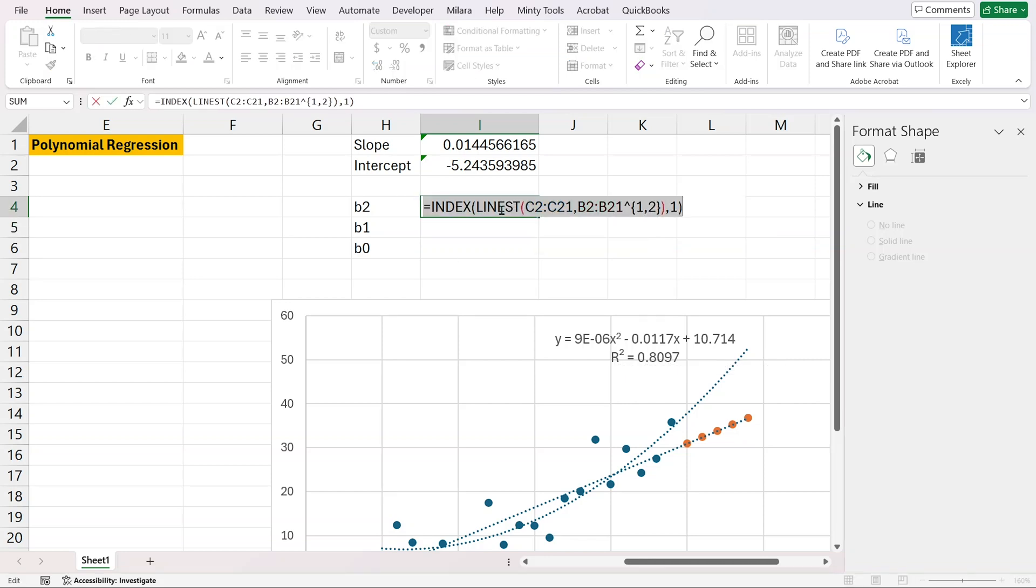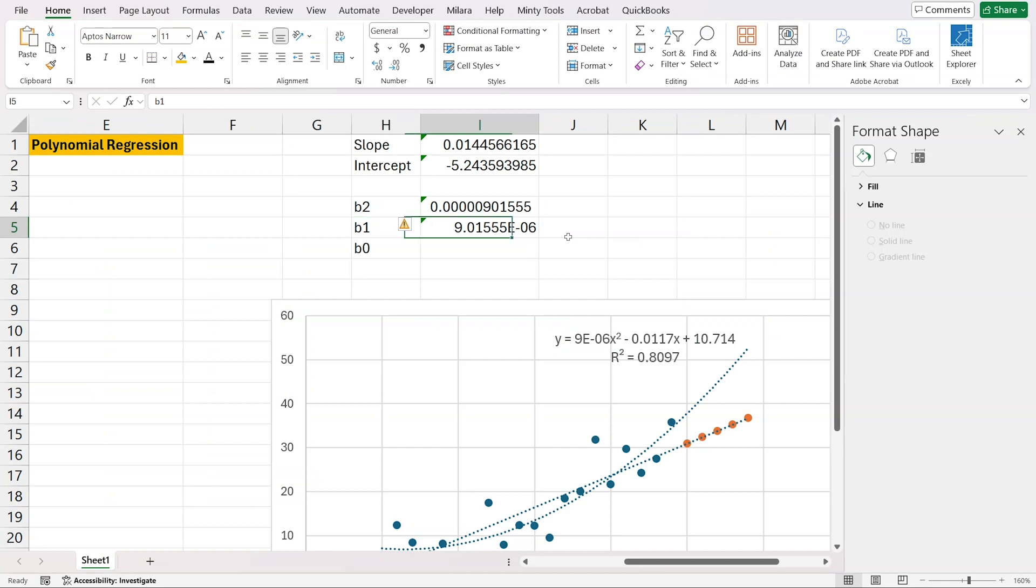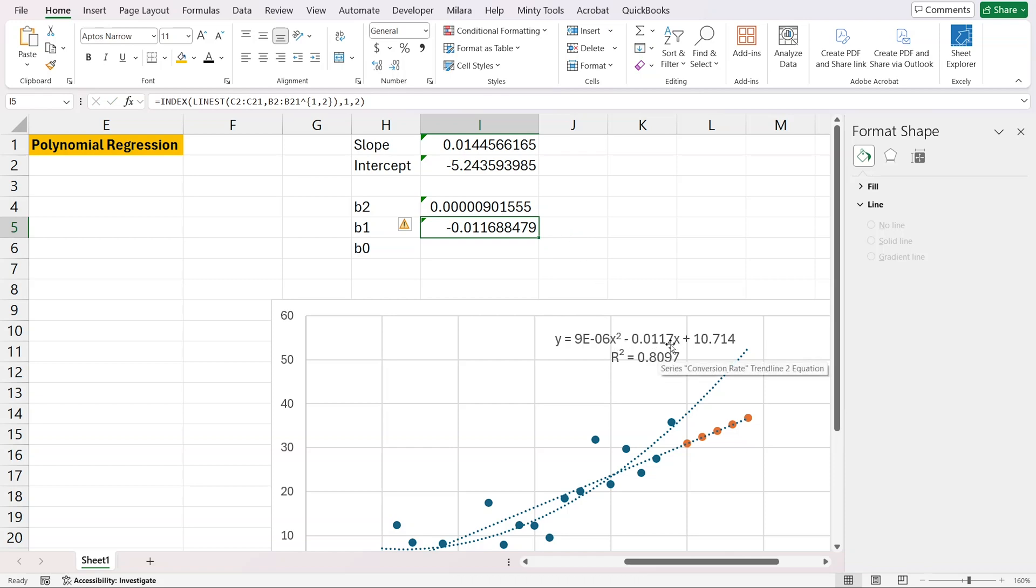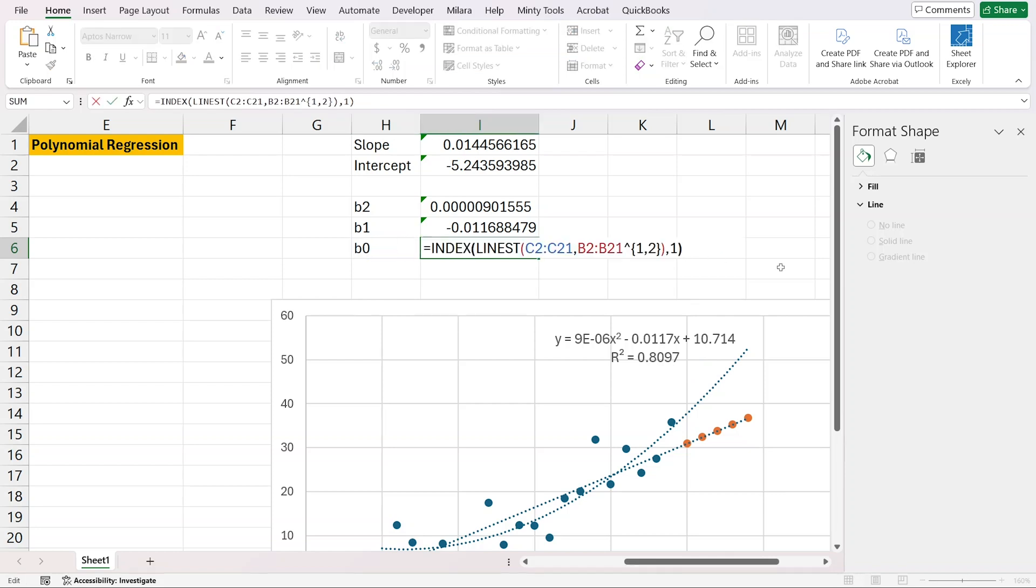Then B1 will essentially be exactly the same formula, but apart from the row number one, I'm going to give it a row number of two. This is how we get B1, the second variable here. And then B0 will do the same formula, but instead of column two, we'll have column three and we get our B0 variable here.